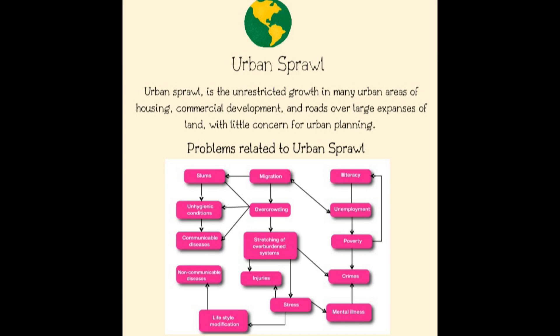To every problem we have a solution. For this problem, we have a solution called the smart growth system. The smart growth system is designed to combat urban sprawl by developing in a way that does not jeopardize the land or community. Planners and architects who promote smart growth seek to develop a stronger sense of place through a more compact way of development, also known as mixed-use development. Mixed-use development combines residential areas with places of employment and commerce, instead of isolating individual areas.